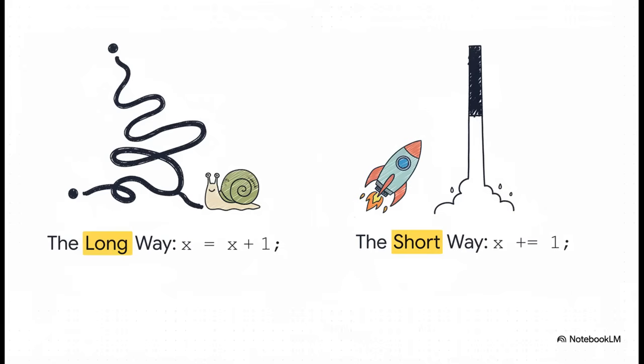So just take a look at these two lines of code. On the left, we've got something we've all written a million times: X equals X plus one. It works, it's totally fine. But then look at the right, X plus equals one. Here's the thing, both of these lines do the exact same thing. They take the value of X and add one to it. But one of them is obviously a lot shorter.